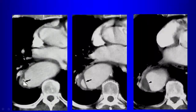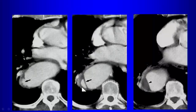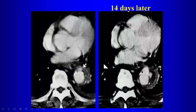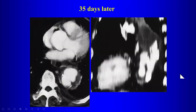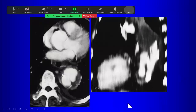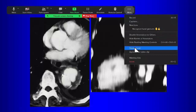Here is another example of a penetrating aortic ulcer with associated hematoma, followed over time showing progression to a complex pseudoaneurysm. At 35 days the lesion is much worse. These therefore require close follow-up to ensure they are not progressing.